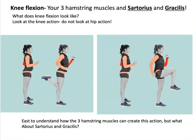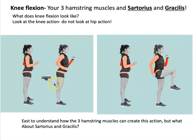Now knee flexion — the opposite of extension — we're going to be bending the knee. I'm showing you two different illustrations of knee flexion. Do not look at the hip; you are only looking at the knee. The hamstrings, which are posterior, insert either in the tibia or fibula, and they pull the tibia or fibula up towards the backside, giving you knee flexion.